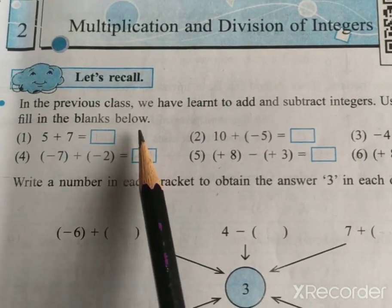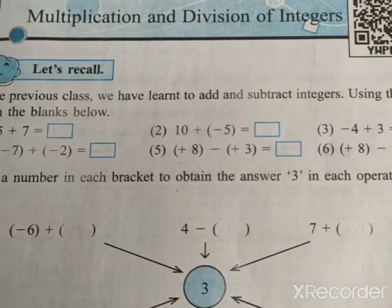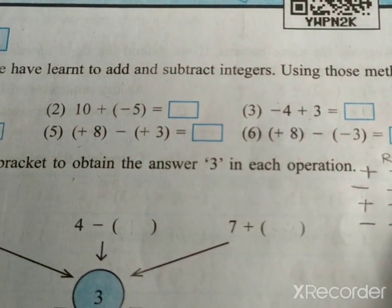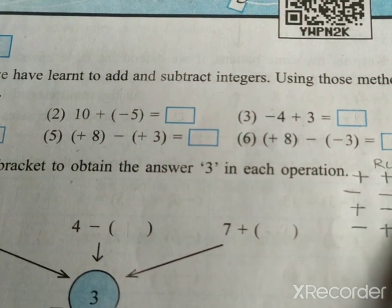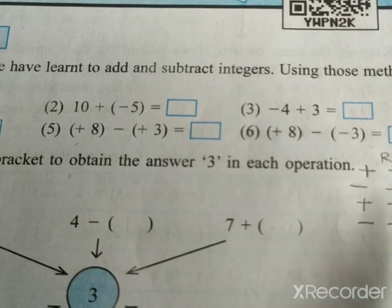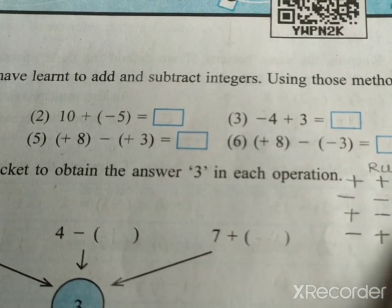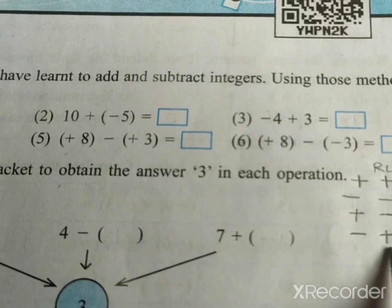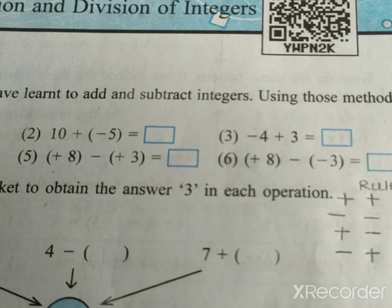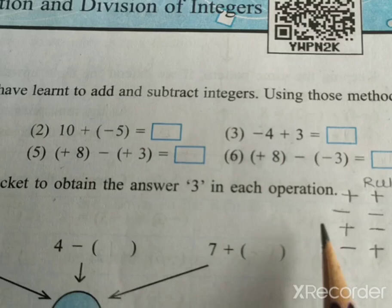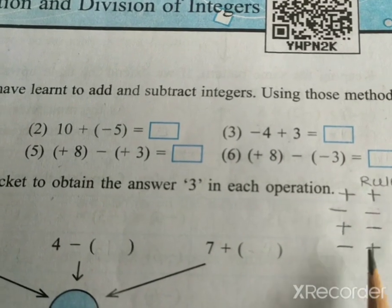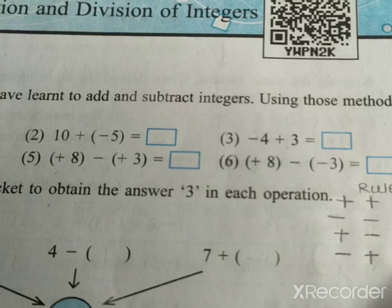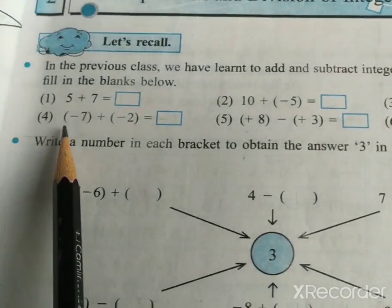First of all, see the rules. Positive and positive makes positive. Negative and negative makes positive. Positive and negative equals negative. And negative and positive equals negative. Meaning: same signs give positive; different signs give negative. By using these rules, we solve these examples.